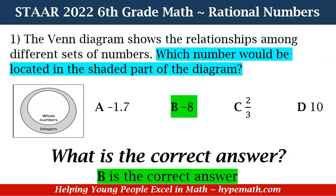You may be asking: what about D, which is 10? Remember, in the shaded area — 10 is actually a whole number. It can go in the white area with whole numbers because it's a positive integer. Yes, it can go into the integers part as well, but the number that can be located only in the shaded part of the diagram is negative 8.